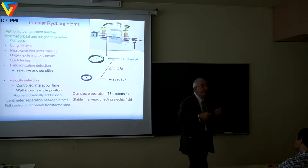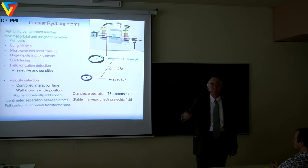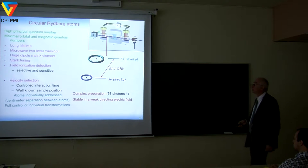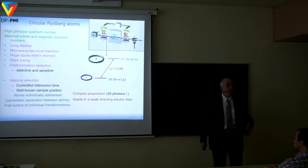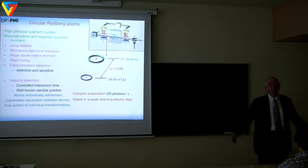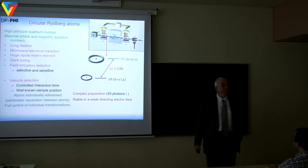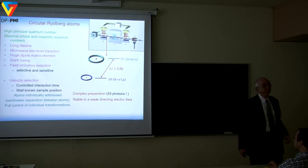We can select the atoms' velocity — they fly through the experiment at thermal velocity, about 250 meters per second for rubidium atoms at oven temperature. We use the atoms to get information about the field, and the faster the atoms, the more information we can extract per unit time. We also have single-atom state-selective detection, which is essential in this experiment. The field that ionizes the atom varies like the fourth power of the principal quantum number, making it easy to distinguish one state from the other.